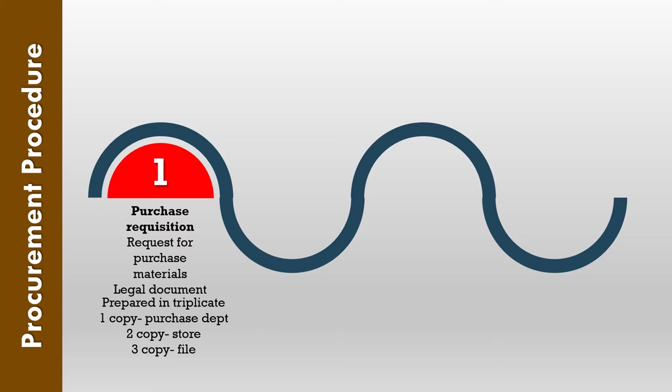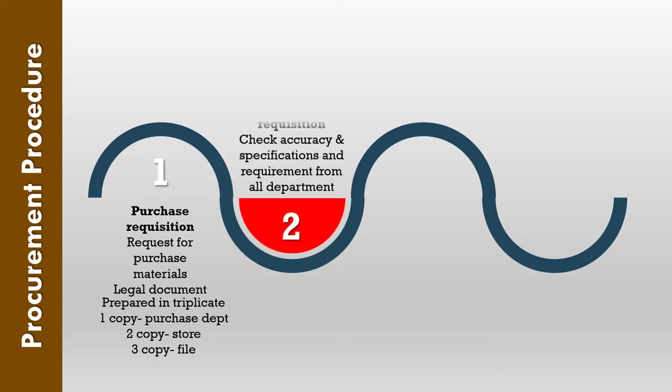After sending or receiving the purchase requisition, the second stage is scrutiny of all requisitions received at the pharmacy. Check accuracy and specifications as well as requirements from all departments. The indent must be scrutinized for accuracy and completeness of description.